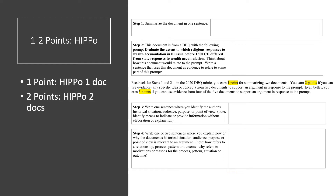The last two points are the HIPPO points — one point for HIPPOing one document, a second point for HIPPOing a second document. I'll put the HIPPO sheet on Schoology under the AP exam review folder. One common mistake: you might tell me the purpose of a document perfectly, but step four requires that in two to three sentences you explain how that HIPPO element — in this case purpose — helps support your argument or gives relevance to it. For example, if the intended audience is the king of France, the follow-up question is: why does the audience of the king of France actually matter? That's what a lot of you are missing — add two to three sentences explaining why it's relevant to the topic.